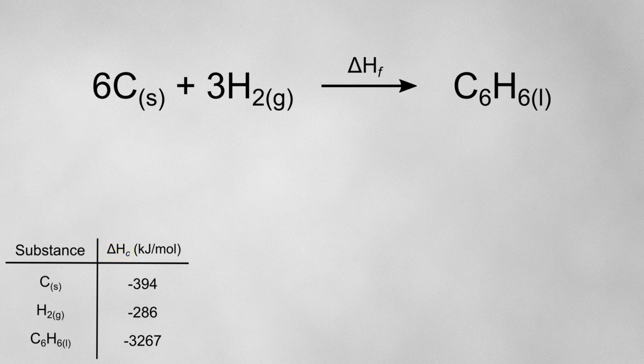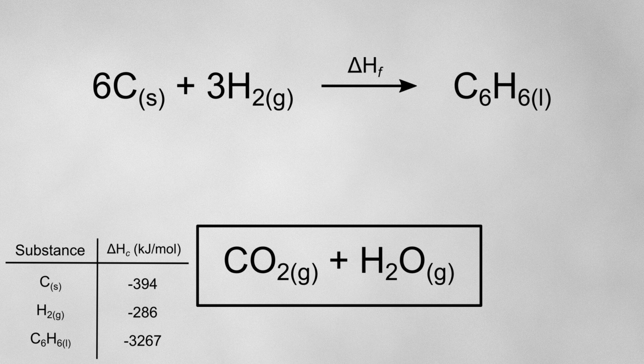To do this, I'll put a box underneath the reaction, and in it I'll put the combustion products for everything in this reaction. I'm going to use this box to visually represent the products which form from combusting the substances in our reaction. Since the combustion enthalpy describes the formation of these combustion products, I'm going to draw arrows from my reactants down to the box and from my products down to the box. This sets up my Hess cycle.